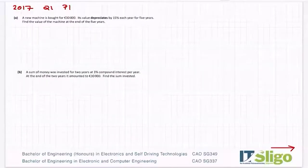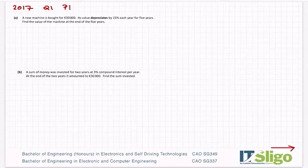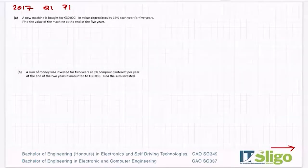Okay let's have a look at the 2017 question, a financial maths one, quite different to the last one we did, the 2018 question. A new machine is bought for €30,000, its value depreciates by 15% each year for five years. Find the value of the machine at the end of five years. Many pieces of machinery depreciate or lose value year on year, so a car is the very obvious one that loses value every single year.